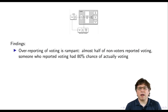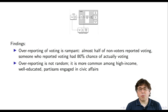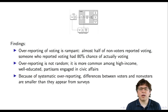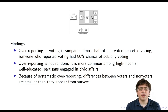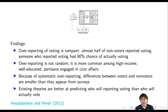So what did they find? First, over-reporting of voting is rampant. Almost half of non-voters reported voting, and someone who reported voting had actually only an 80% chance of having voted. Over-reporting is not random — it's most common among high-income, well-educated partisans who are engaged in civic affairs. Because of this systematic over-reporting, differences between voters and non-voters are actually smaller than they appear in surveys. And existing theories are better at predicting who will report voting than who will actually vote.